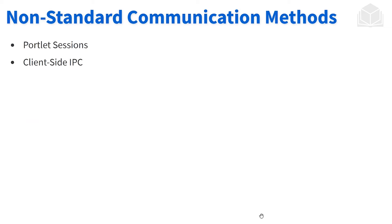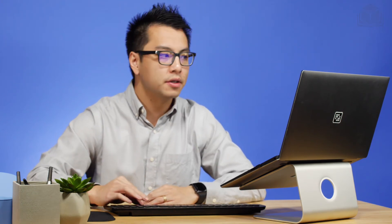We have public render parameters and events as the two primary ways of interportlet communication. We're going to touch briefly on some of the non-standard ways in which interportlet communication can be achieved. One of the ways is through portlet sessions — what we can do is have portlets share their session data amongst one another.